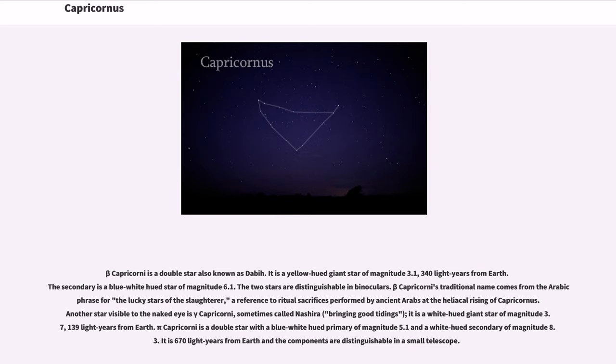Pi Capricorni is a double star with a blue-white-hued primary of magnitude 5.1 and a white-hued secondary of magnitude 8.3. It is 670 light-years from Earth and the components are distinguishable in a small telescope.